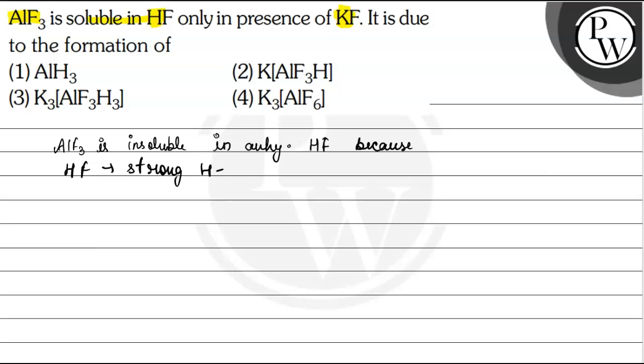And due to this strong hydrogen bonding in case of HF, the F negative ions are not available. So we can say that because of this strong hydrogen bonding, F negative ions are not available.